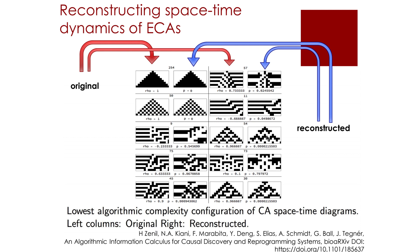The values at the bottom of each case are the Spearman correlation values between the original and reconstructed version. As you can see, correlation values are very high — most of them close to 1 — meaning that we were able to almost fully reconstruct the original systems. In all cases, we captured the qualitative dynamics even in those with low correlation value. So you can see how we can capture something more fundamental and algorithmic than statistics and correlation alone would be able to see.